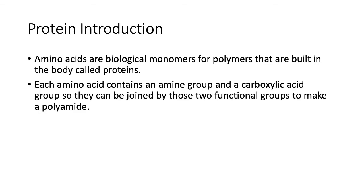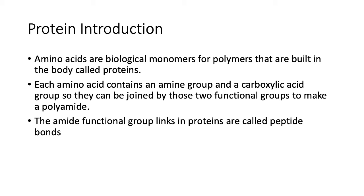Each amino acid contains an amine group and a carboxylic acid group, so they can be joined by those two functional groups to make a polyamide as the polymer. The amide functional group links in proteins are called peptide bonds.